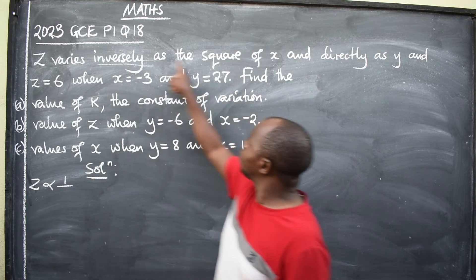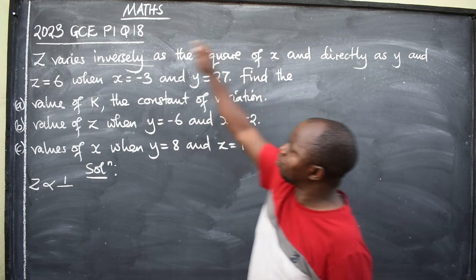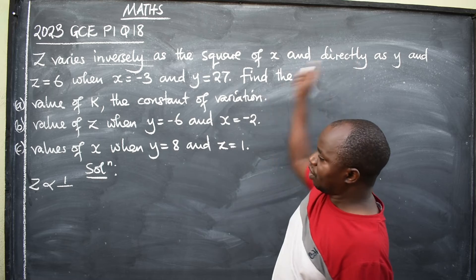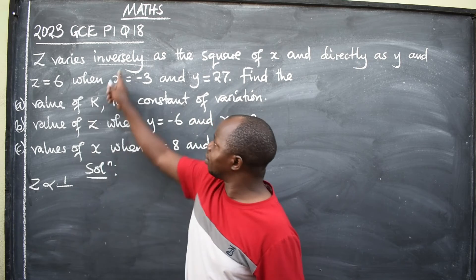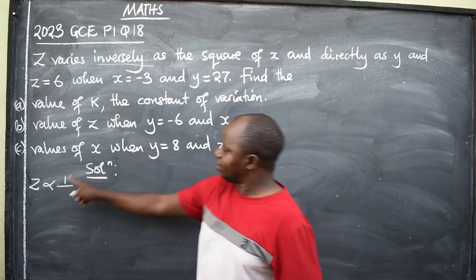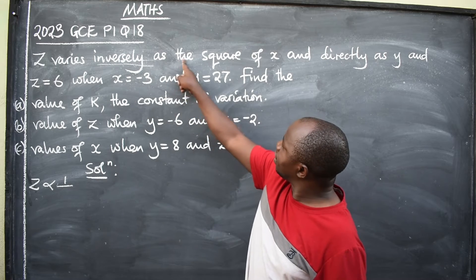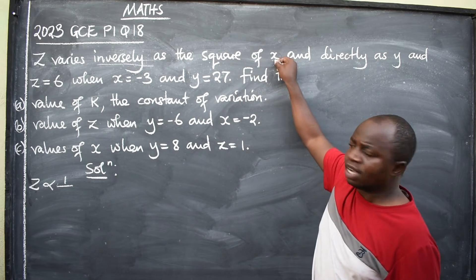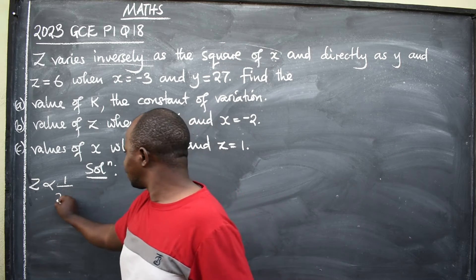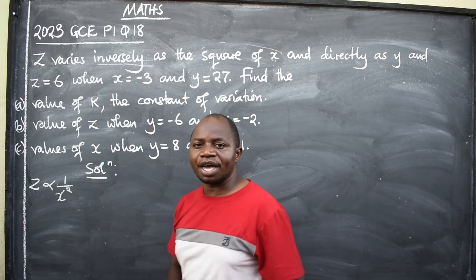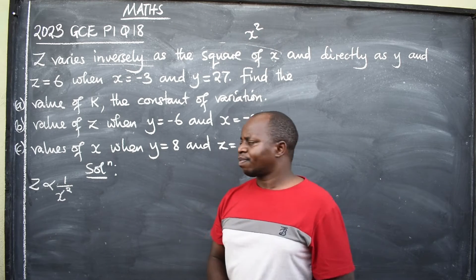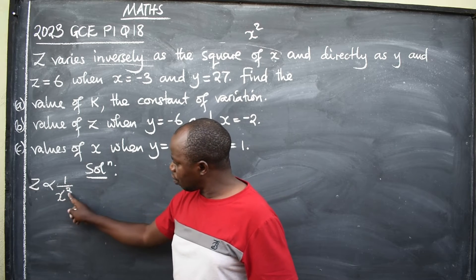Z varies inversely — the word 'inversely' means one over. So Z varies inversely as the square of X. 'Square of X' means X squared. So we write Z proportional to one over X squared. If it were 'Z varies directly,' you would write without the one over, because directly means it stays in the numerator.